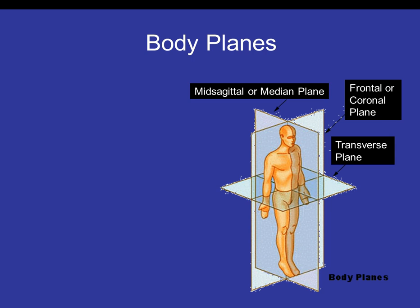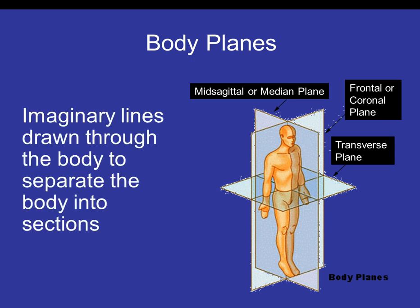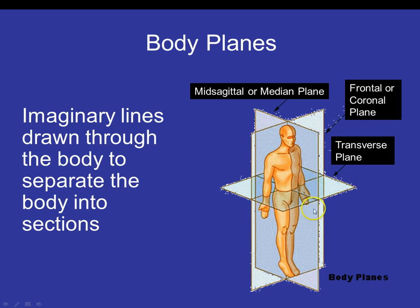Body planes are imaginary lines drawn through the body to separate it into sections, giving us a reference point for directional terms. We have three planes: the mid-sagittal plane, which divides the body into right and left; the frontal or coronal plane, which divides the body into front and back; and the transverse plane, which cuts at the belly button and divides the body into top and bottom halves.